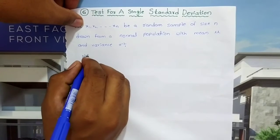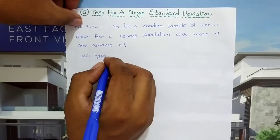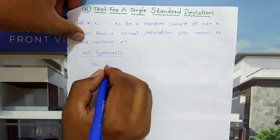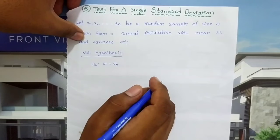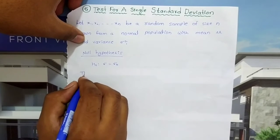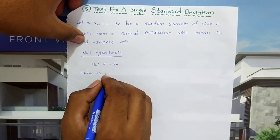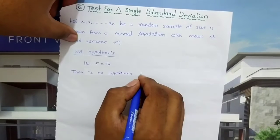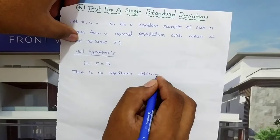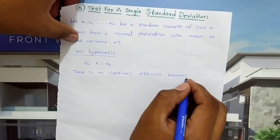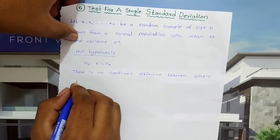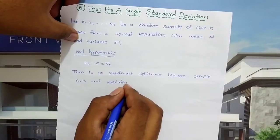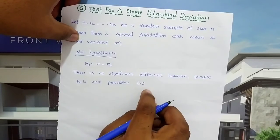Null hypothesis H0: sigma equal to sigma0. There is no significant difference between sample standard deviation and population standard deviation.